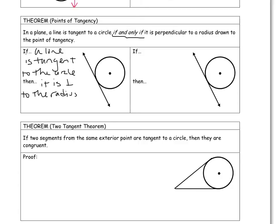So that means if I already know that the line I have here is a tangent line, then I know when I draw a radius out to the point of tangency, I can mark that as a right angle.